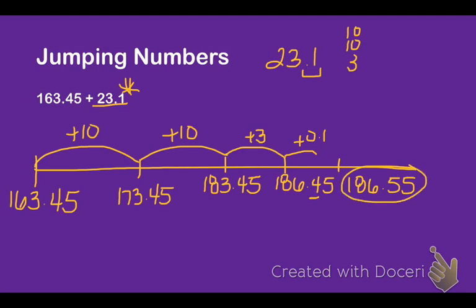And so that is the final answer to 163.45 plus 23.1. That is the jumping strategy.